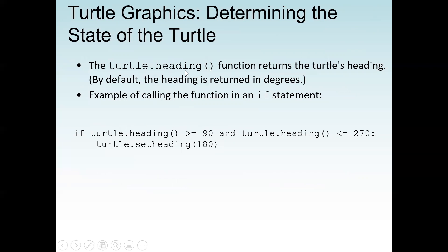The turtle.heading() function returns the turtle's heading. By default, the heading is returned in degrees. An example using an if statement: if turtle.heading() is greater than or equal to 90 and also turtle.heading() is less than or equal to 270, then we want to set the heading to 180. The setheading() function sets the heading to the value passed as the argument.